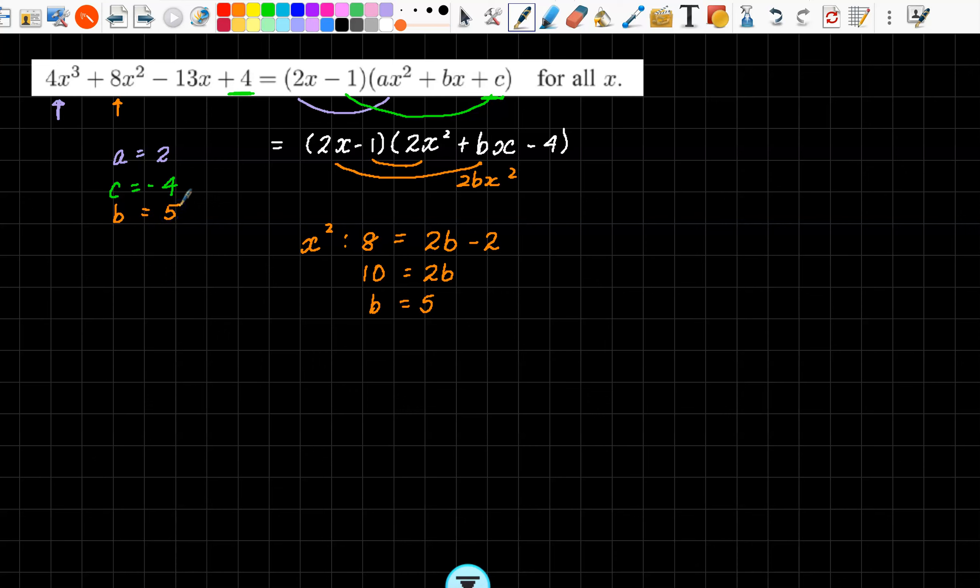So now what we have is our polynomial. This is now going to equal 2x take 1, that's the bit they gave us, and now the quadratic will be 2x squared plus 5x take 4. And we're done.